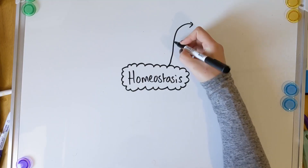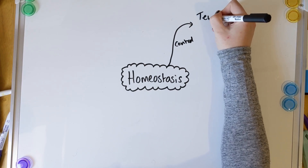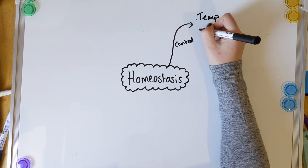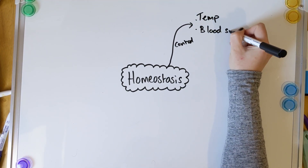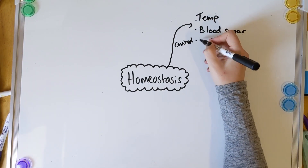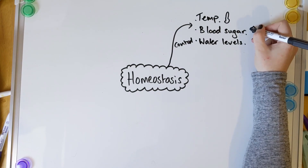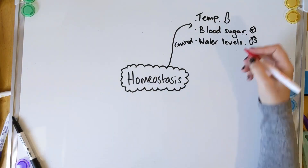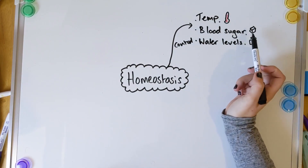So the first thing I'm going to start with is what homeostasis affects. Homeostasis controls or affects three main things in your body that you need to know about. It controls your temperature, it controls your blood sugar or blood glucose levels, and it also controls things like your water levels — so how much you wee in a day, as well as sweating.